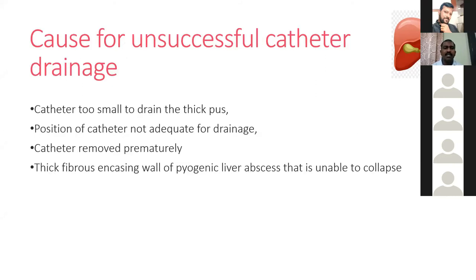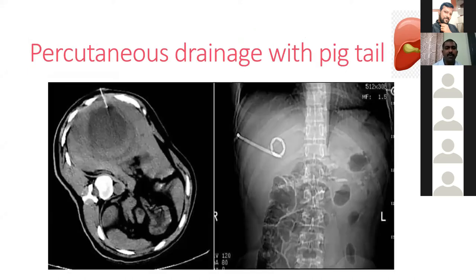Causes of unsuccessful catheter drainage include: a catheter too small to drain the pus, inadequate catheter position not placed centrally in the abscess cavity, premature removal before complete drainage, or a thick fibrous capsule causing encasement of the pyogenic liver abscess that is unable to collapse. This is a CT image showing a pigtail catheter in the center of the abscess, with an X-ray also showing the pigtail catheter position.